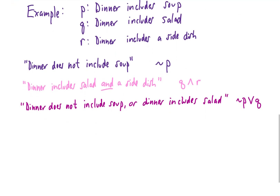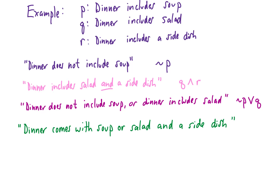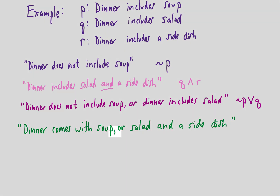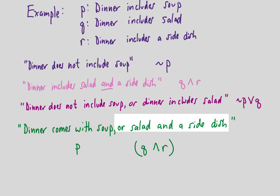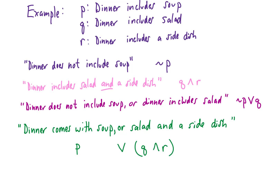Let's break down 'dinner comes with soup or salad and a side dish'. This statement is ambiguous because we don't know whether to group 'soup or salad' together or 'salad and a side dish' together. We need a comma to clarify. If the comma comes after 'soup', the sentence means: dinner comes with soup (p), or dinner comes with salad and a side dish (q ∧ r) — giving you a choice between soup alone or salad with a side dish.